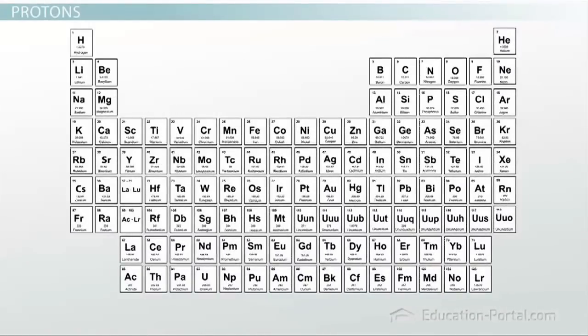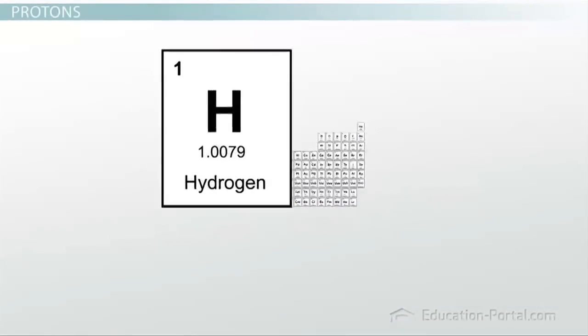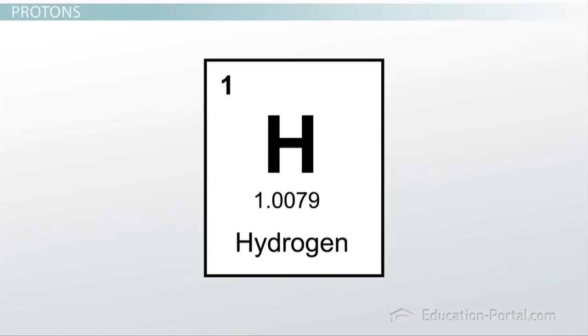You should notice a few things about this box. First, it may have a large H printed in it. This is the chemical symbol for hydrogen. Each element has a different chemical symbol.